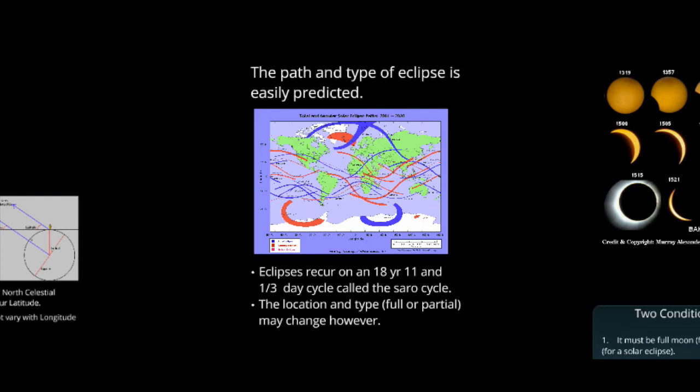We can predict where the solar eclipses will occur, both when and at what point in time, and where they will occur on the Earth. They occur every 18 years and 11 and one-third days, and this is called the Saros cycle. The location changes every time, and we can have partial or total eclipses, and we are able to predict those.